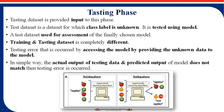The next part is the testing phase. Testing dataset is provided as output to this phase. Whatever input was given to the training phase, you need to check whether the new dataset is correctly predicted or not. Test dataset is a dataset for which the class label is unknown. Here you pass only the image to the machine, and the machine generates whether the particular image is apple or not. Training and testing datasets are completely different — the first is 70% of data and the remaining is 30%.